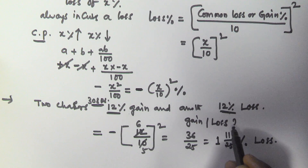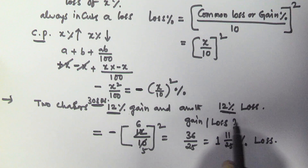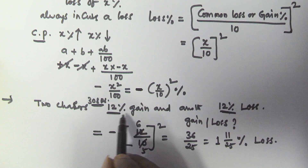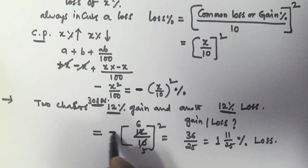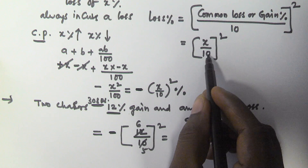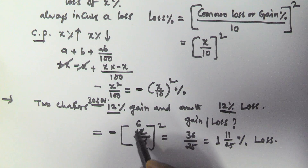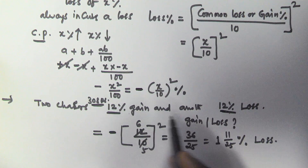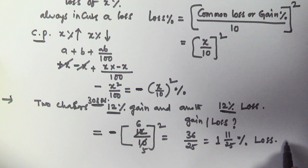Whenever two identical articles are sold — one at the same percentage gain and another at the same percentage loss — the overall result is always a loss. The loss percentage is given by (x/10)². Here x = 12, so substituting: (12/10)² = 144/100 = 1 and 11/25 percentage loss. I hope you got this — whenever you get this kind of problem, use the trick: (common loss or gain / 10)².